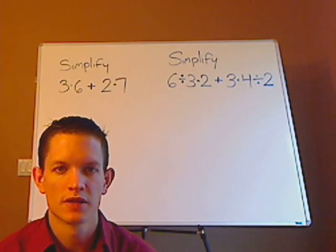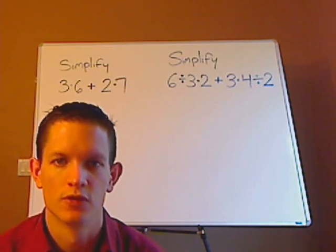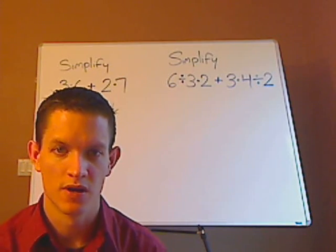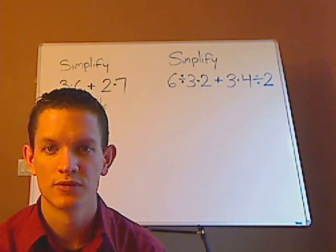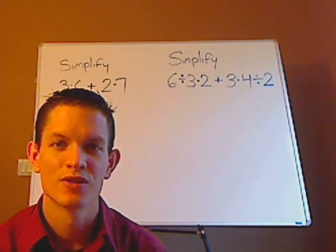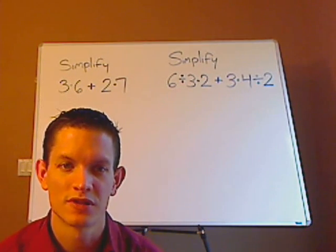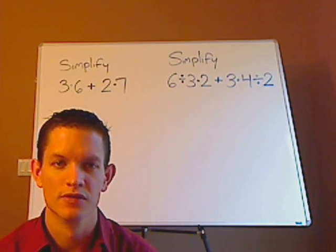It's 3 times 6 plus 2 times 7, that's the first one, and then the second one is 6 divided by 3 times 2 plus 3 times 4 divided by 2. Pause for a sec and see if you can try and do these on your own.